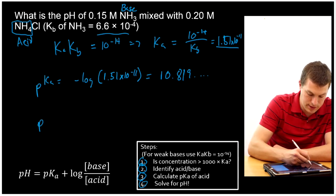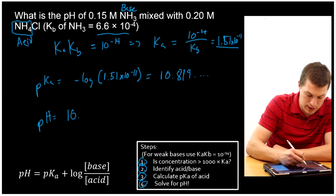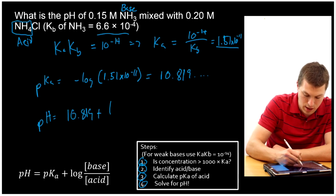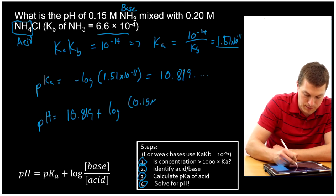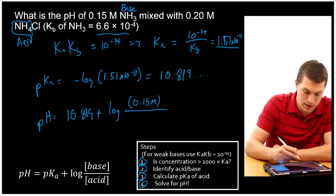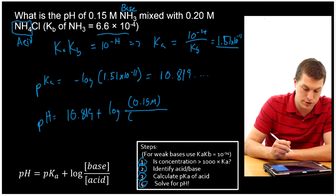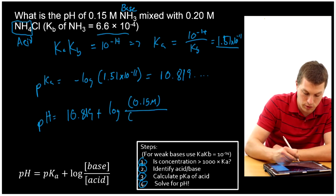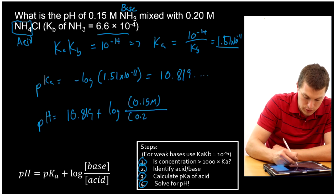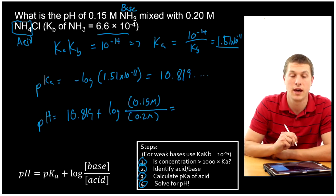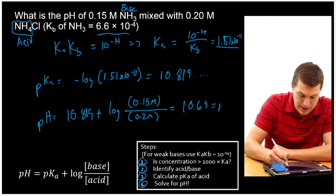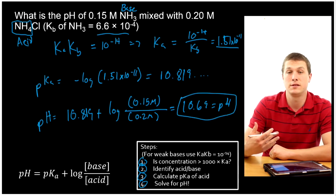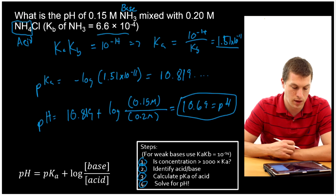pH is equal to pKa, which is 10.819, plus log of the concentration of my base, 0.15 molar, because my base is ammonia, divided by the concentration of my acid, which is my ammonium chloride, at 0.2 molar. So that gives me the pH of my buffer solution. When I plug that in, it's 10.69. Not surprising that my pH is high, above 7, because I started with a base. So this is a buffer that works at basic pHs.